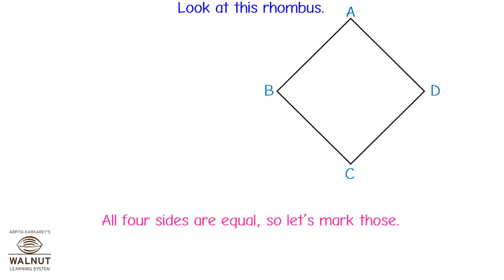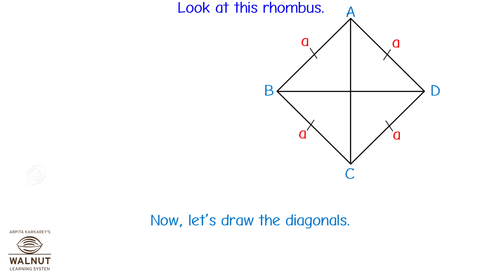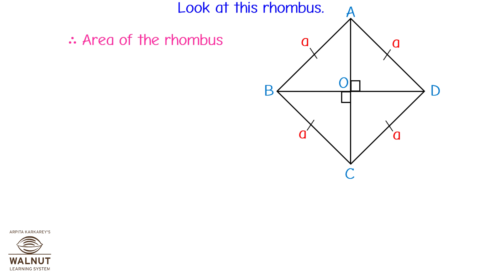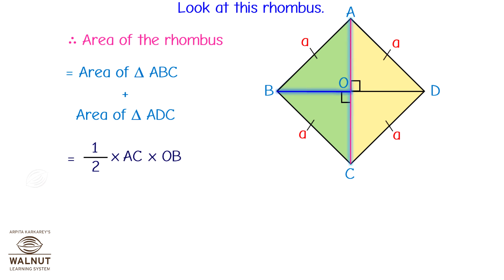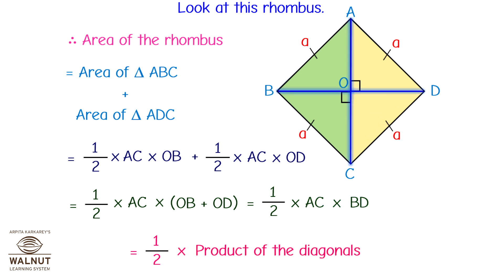Look at this rhombus. All four sides are equal, so let's mark those and label each as A. Now let's draw the diagonals. You know that the diagonals intersect each other at right angles. Therefore, area of the rhombus equals area of triangle ABC plus area of triangle ADC, which equals half into AC into OB plus half into AC into OD, which equals half into AC into (OB plus OD), which equals half into AC into BD, which equals half into the product of the diagonals.